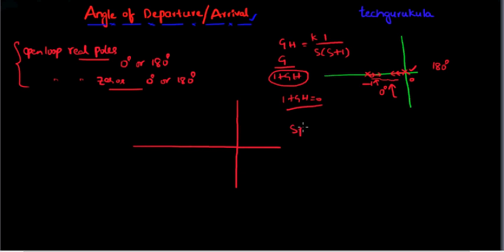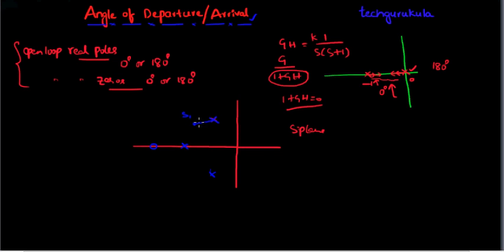Let us take an example on the S-plane. Consider a pole-zero configuration with two complex conjugate poles, two more complex conjugate poles, one real pole, and one real zero. Now take a test point S1 and assume S1 is on the root locus. If S1 is on the root locus, we consider the angles made by all poles and zeros to this point. Let me name one of the complex poles as P, with angle phi_P, and the other contributions phi_1, phi_2, phi_3.